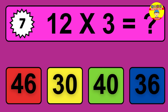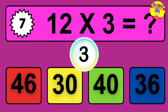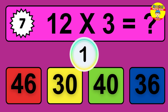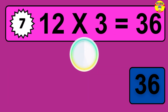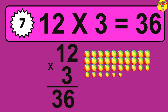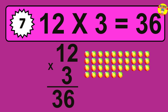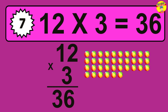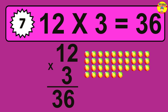Question seven: 12 times 3 equals what? The answer is 12 times 3 is 36. To calculate, we have 12 groups with 3 balls each. So how many balls do we have? 36 balls.